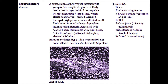Next we'll discuss rheumatic heart disease. Rheumatic heart disease used to be very common in the United States, but now that strep infections are being treated better, it has become relatively rare. Rheumatic heart disease is a consequence of pharyngeal infection with group A beta-hemolytic strep, or Streptococcus pyogenes.